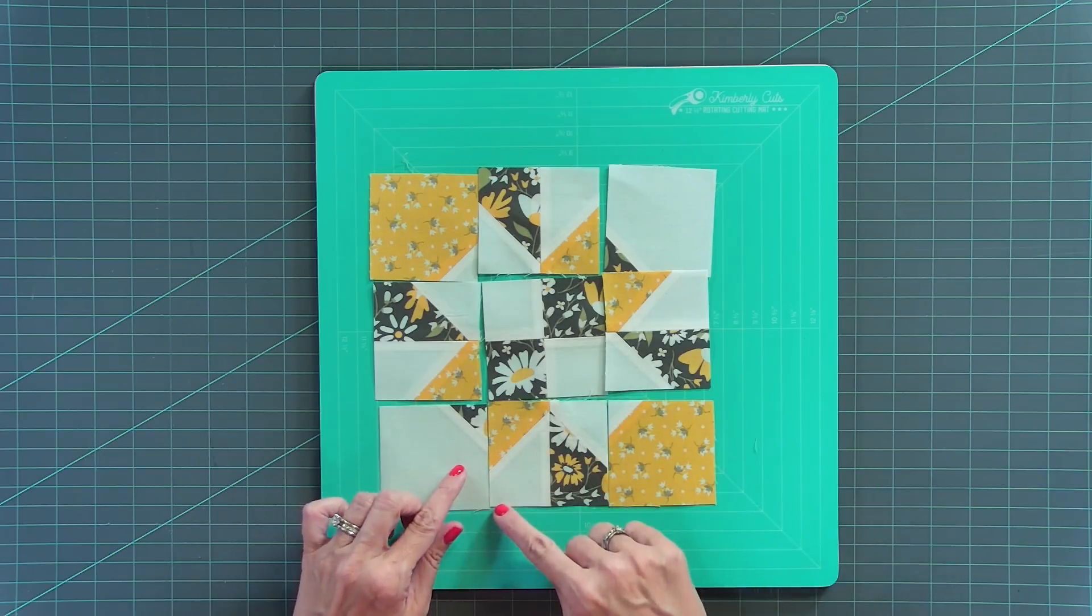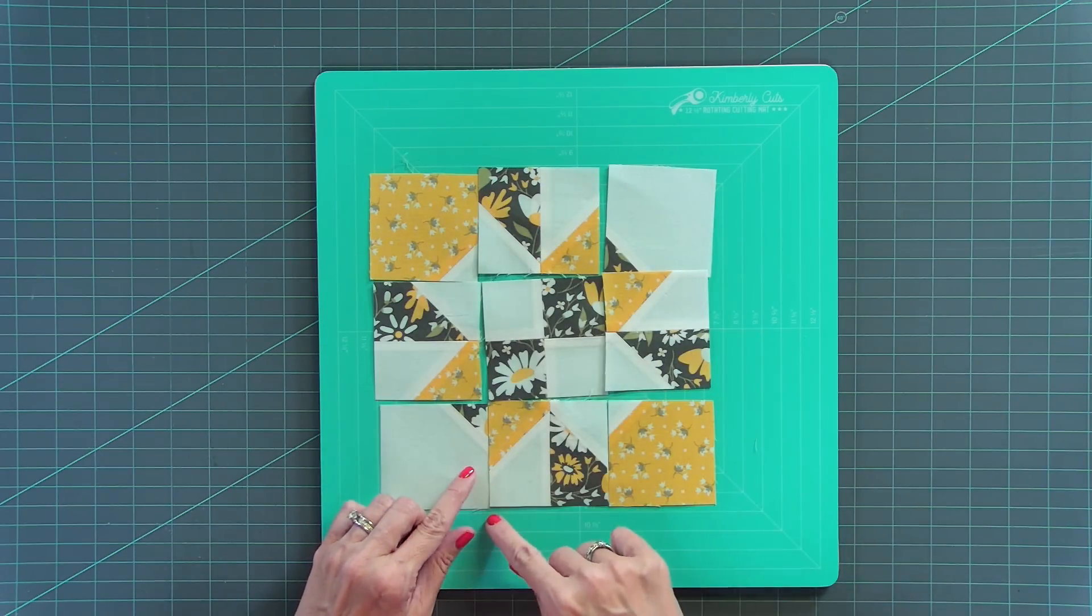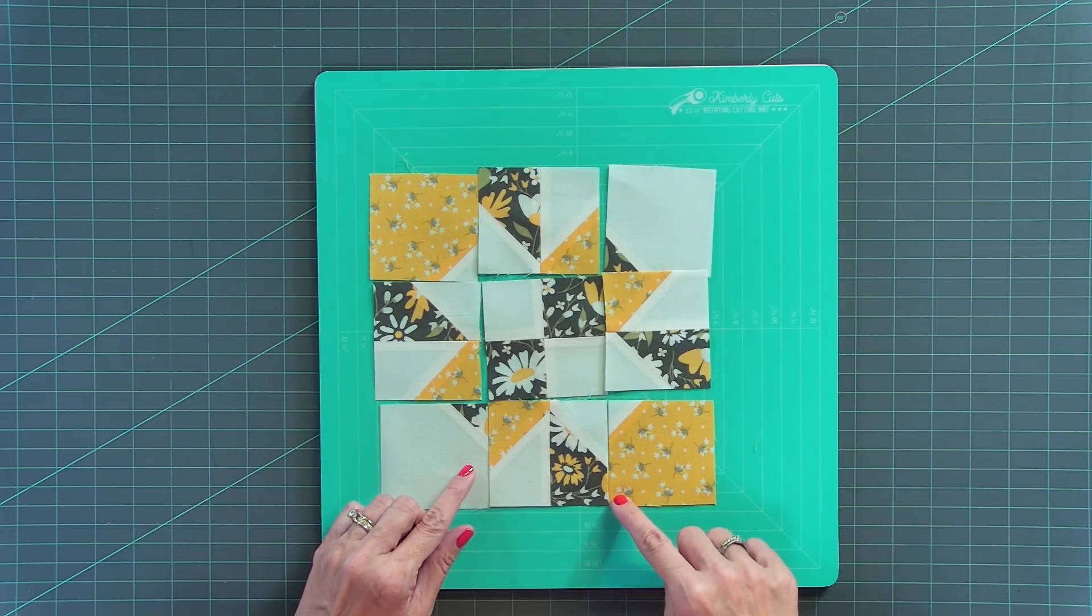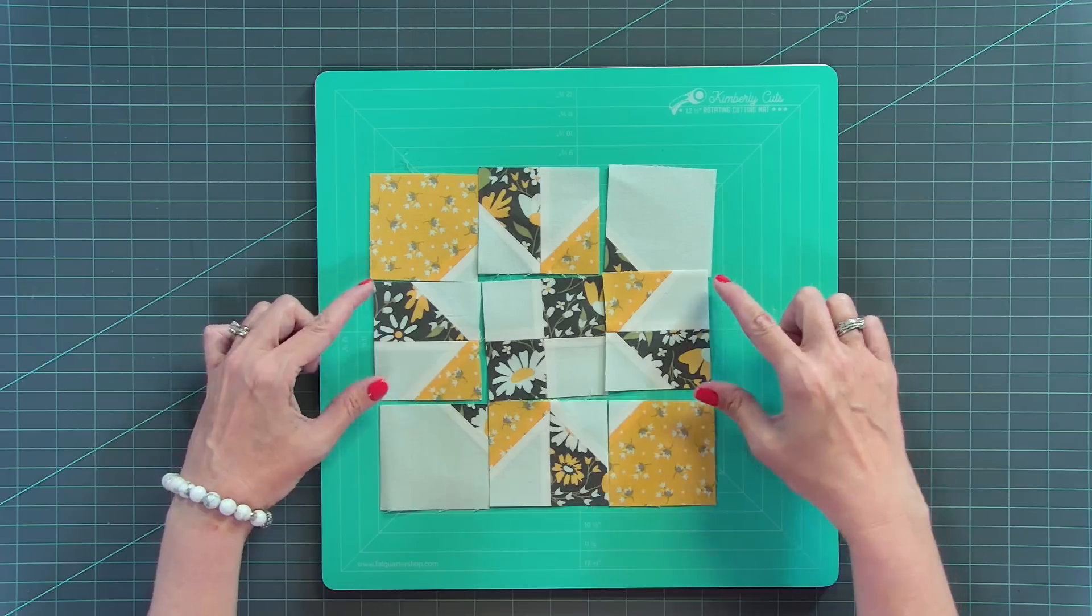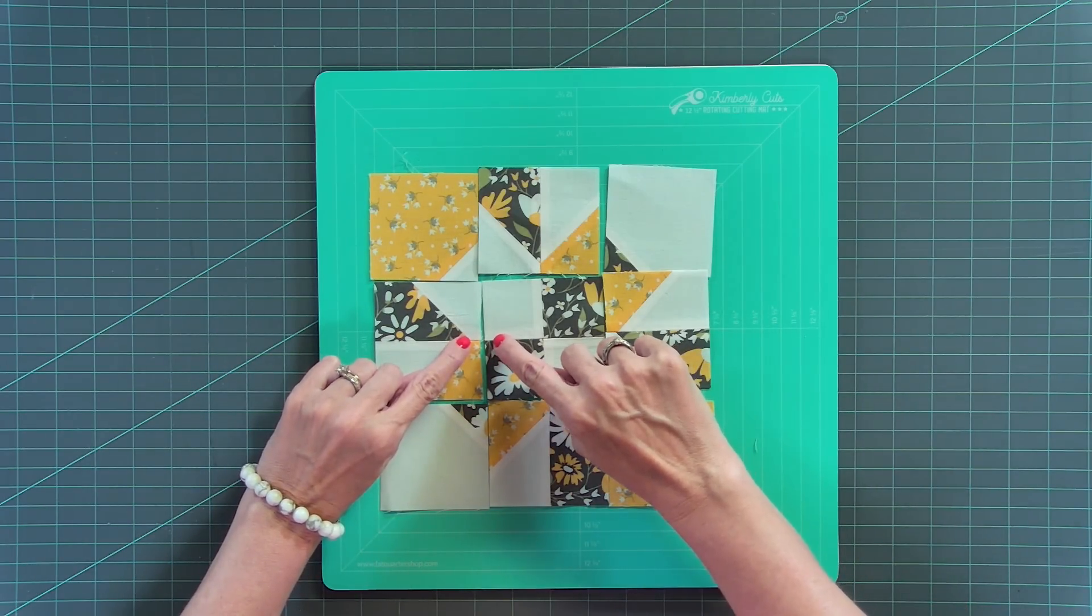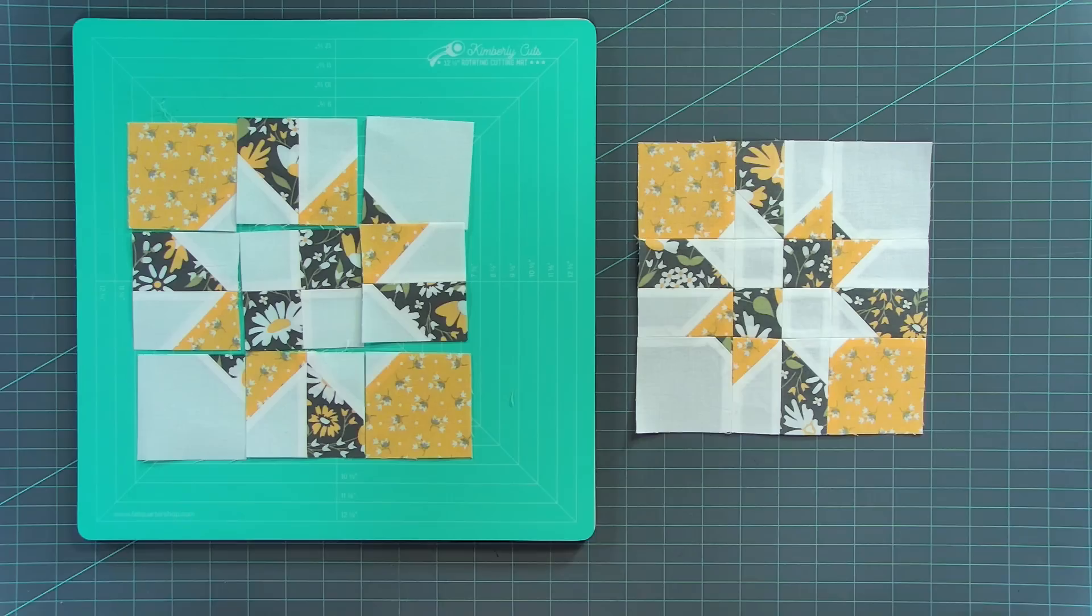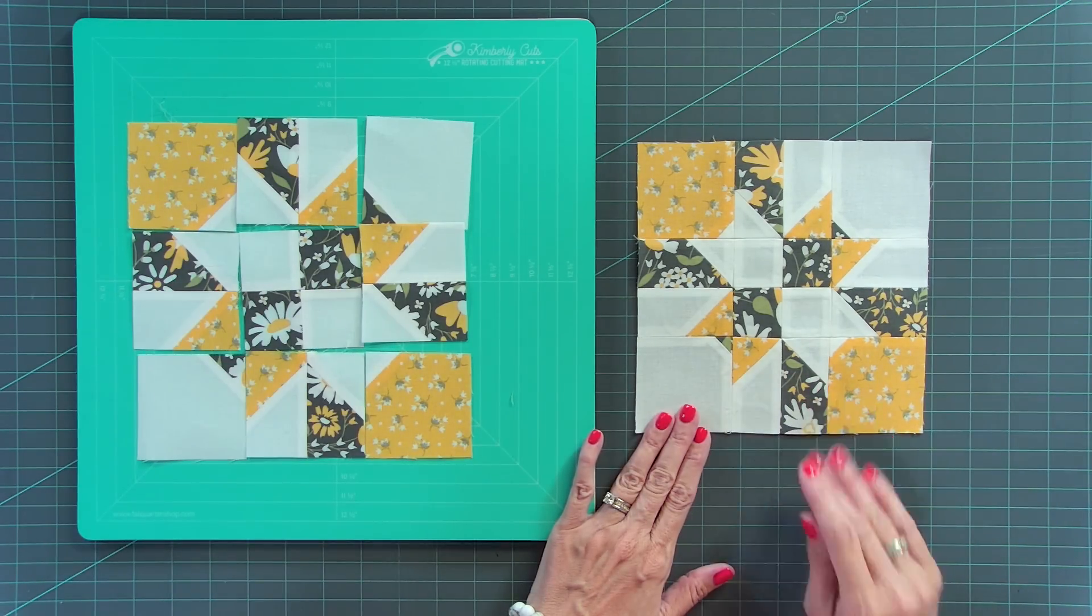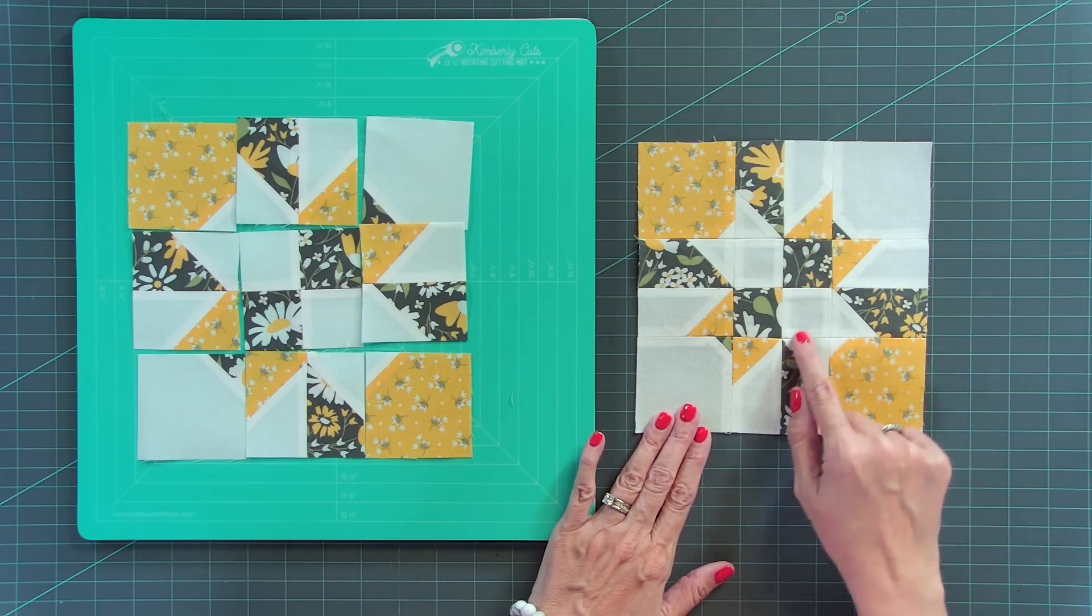And then what you're gonna do is just pin, stitch a quarter inch seam, press according to your pattern, which is gonna be press open, add your last row, press open, and then add these together. And right here, just make sure you're pinning in these intersections. And when you're done sewing these together, you're gonna have a beautiful block that forms this really cool star.